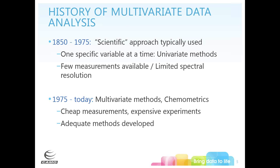Around 1975 is when they came up with multivariate methods, also called chemometrics when applied to chemistry problems. In this case, measurements are cheap but experiments are very expensive because you have a lot of variables changing at once, or a lot of wavelengths if you're doing spectral data. Once we got into Fourier transform systems away from dispersive elements, instead of having 20 or 30 variables, we've now got hundreds or even thousands of wavelengths to look at, requiring methods that could handle that kind of data.